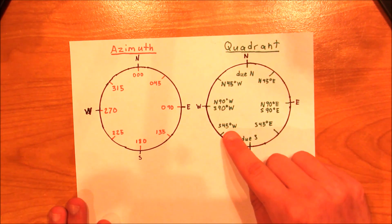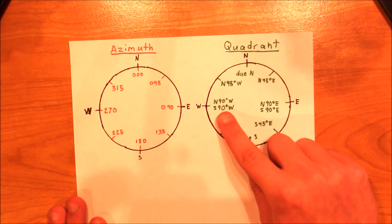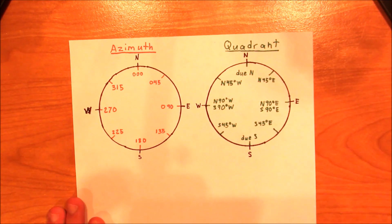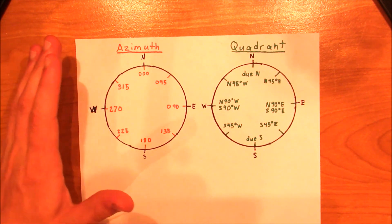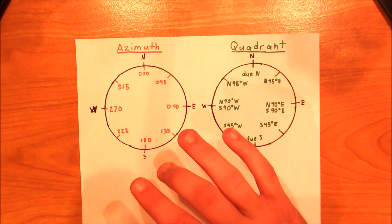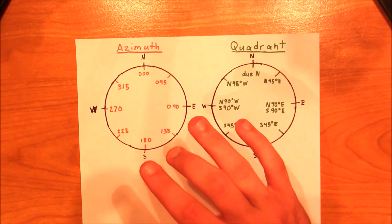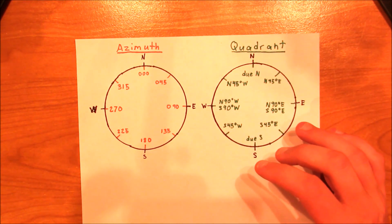Whenever we get to due east, this can be represented two ways: north 90 degrees east or south 90 degrees east — or it might even be easier just to say due east. The same goes for the western direction: north 90 degrees west or south 90 degrees west. For the most part, most people choose to use azimuth because when entering data into computer programs, it's a lot easier to type in three numbers and not worry about accidentally typing north instead of south. But throughout this series, I may switch between azimuth and quadrant just to keep you on your feet.